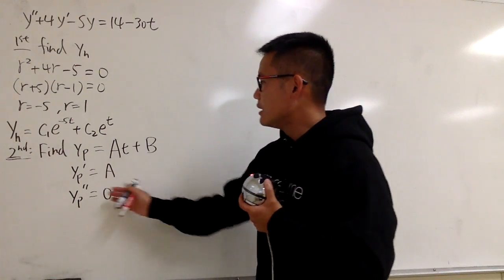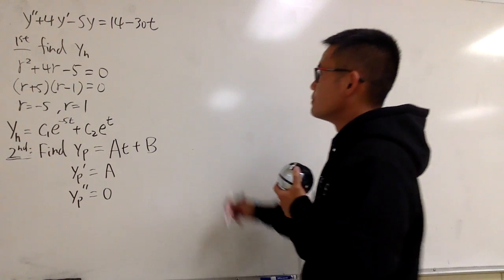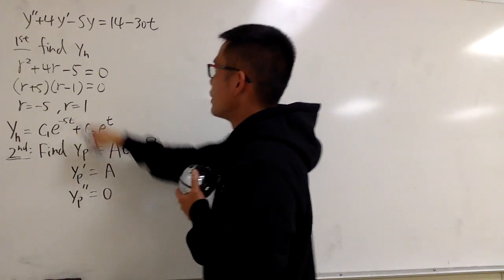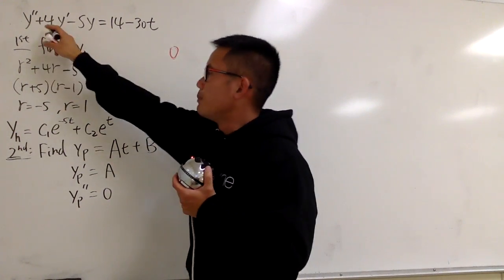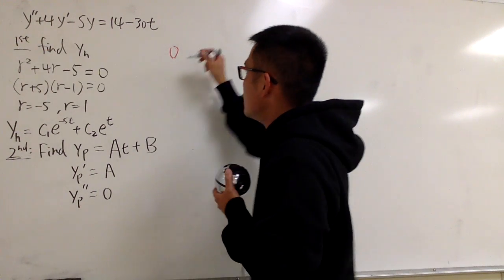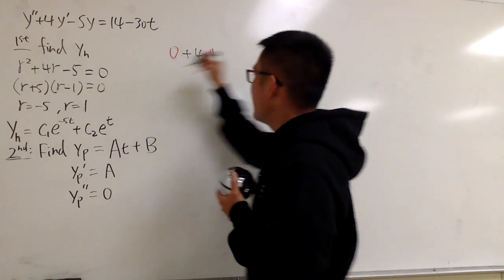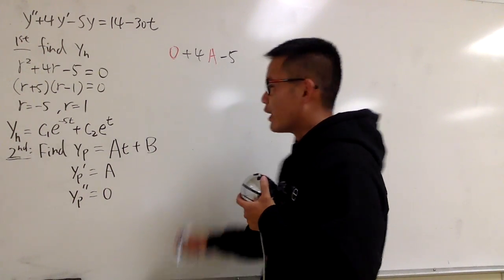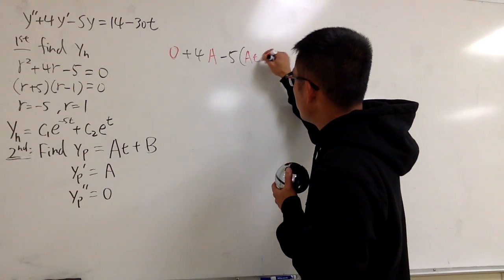Well, I have to plug in this into that, and then I need to solve for a and b. So, you will see, if I plug in this right here, for the second derivative becomes zero. And then we plug in the A into the first derivative. So I'll put down plus 4A, and then we will have the minus 5, the y is this. So I will just write this down, parentheses, At plus B.